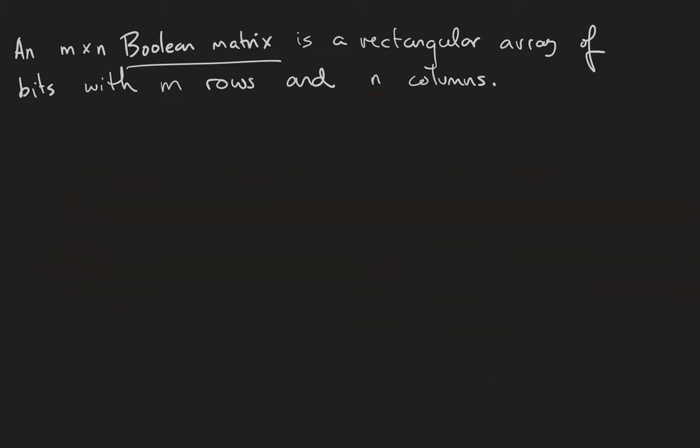A Boolean matrix is just a rectangular array of bits. We say that an m by n Boolean matrix has m rows and n columns. Here's an example of the matrix A, which we will call the matrix 1 1 0 0, 1 0 0 1, 1 1 0 1.